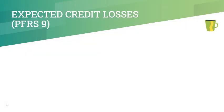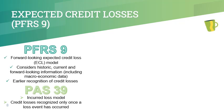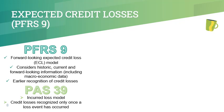PAS 39 has been superseded by PFRS 9 Financial Instruments. One of the notable changes introduced in PFRS 9 is the shift from the incurred loss model to the expected credit loss model in accounting for impairment. The expected credit loss or ECL model under PFRS 9 is a forward-looking model that requires entities to consider past, current, and future information in recognizing credit losses. The ECL model results in an earlier recognition of credit loss than the incurred loss model under PAS 39, which recognizes credit loss only when a loss event has occurred. The ECL model is not yet included in the qualifying exam, but a brief overview is included here to stay updated with the latest accounting standard.